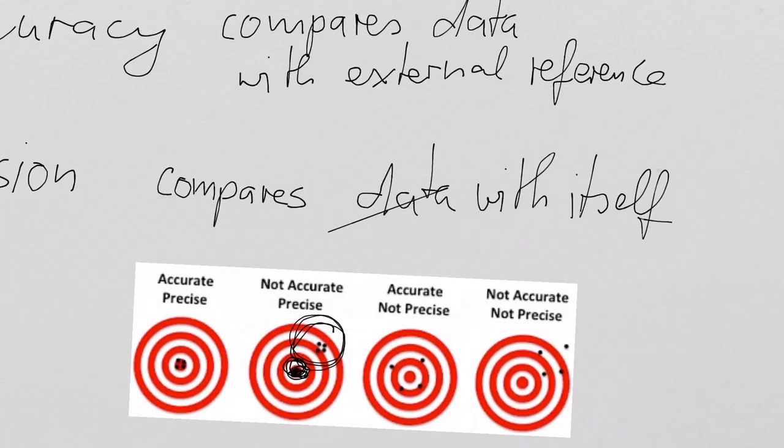Now let's talk about precision — when we compare the data with itself and try to make sense of the data. What do the data actually tell us? As scientists, we do experiments all the time. We ask questions — that is what a scientist does.